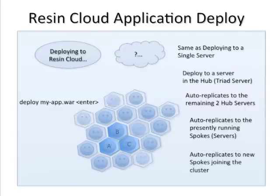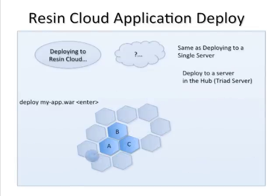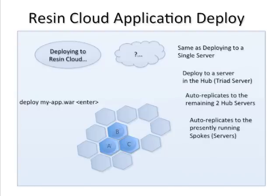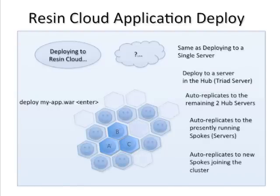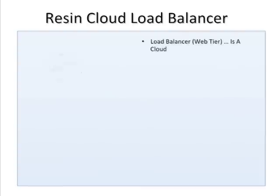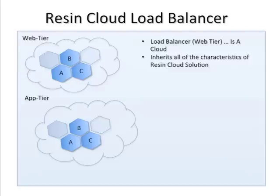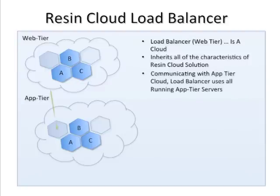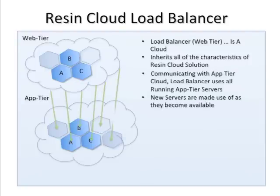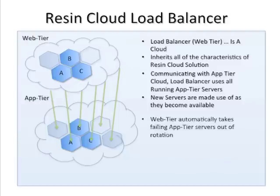Once you deploy an app to a triad server, that app first gets replicated to the other two members in the triad and then it gets replicated to every server in the pod. Resin provides a cluster-aware web tier that has a load balancer faster than Apache HTTP's default web server with URL rewriting, and an HTTP proxy cache server like Squid. The load balancer is cloud-aware — add more servers to the cloud and the load balancer automatically starts sharing load with these new servers.